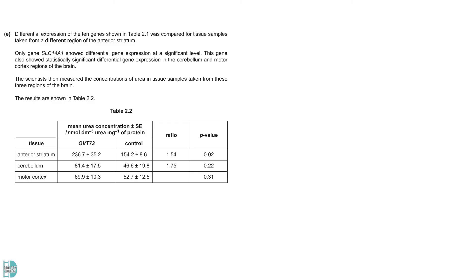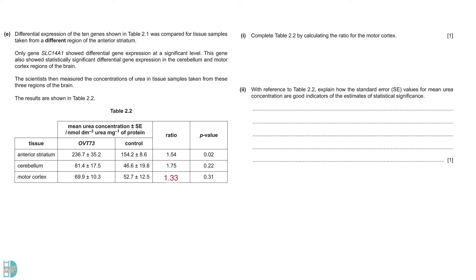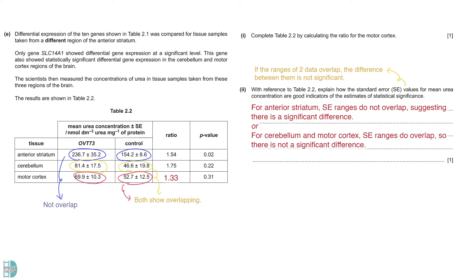In part E, we have another table showing the concentrations of urea in three tissue samples. A gene called SLC14A1 shows differential gene expression at a significant level in these regions. Question 1 wants you to calculate the ratio for the motor cortex. It is 69.9 divided by 52.7 which equals 1.33. Use only two decimal places as that is how the other values are written in the table. Part 2: Explain how the standard error values for mean urea concentration are good indicators of the estimates of statistical significance. The overlapping of standard error ranges between two data indicates a non-significant difference between them. So, according to the table, we can see that for the anterior striatum, the standard error ranges do not overlap, suggesting there is a significant difference. For the cerebellum and motor cortex, however, the ranges do overlap. So, there is not a significant difference between them.